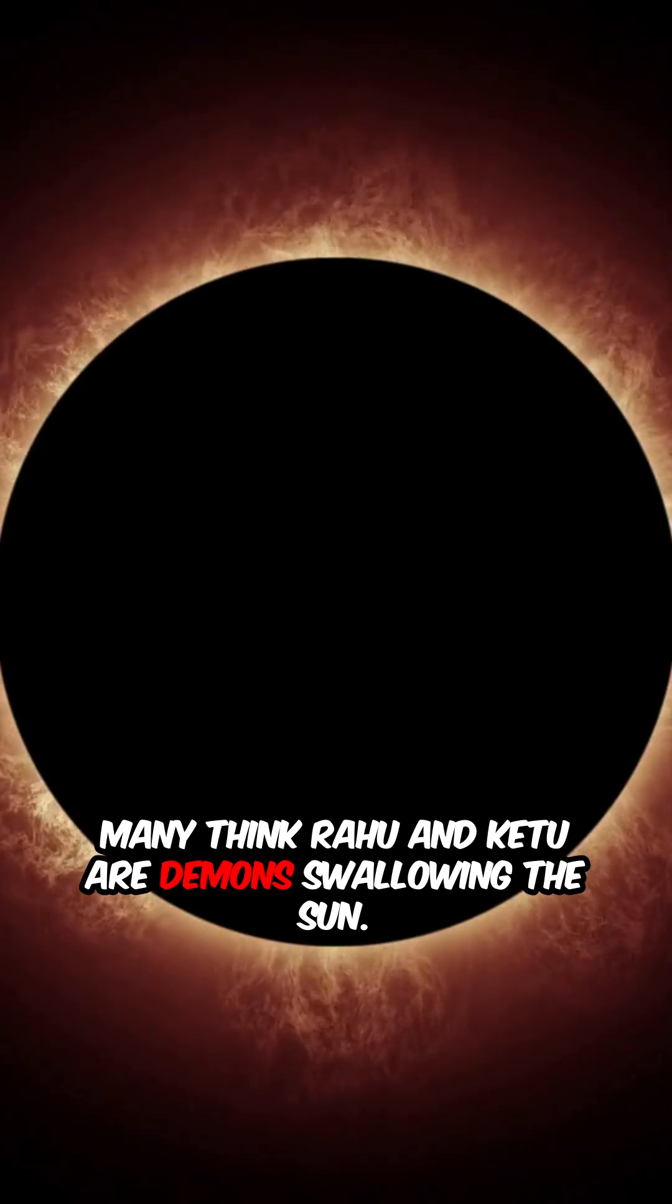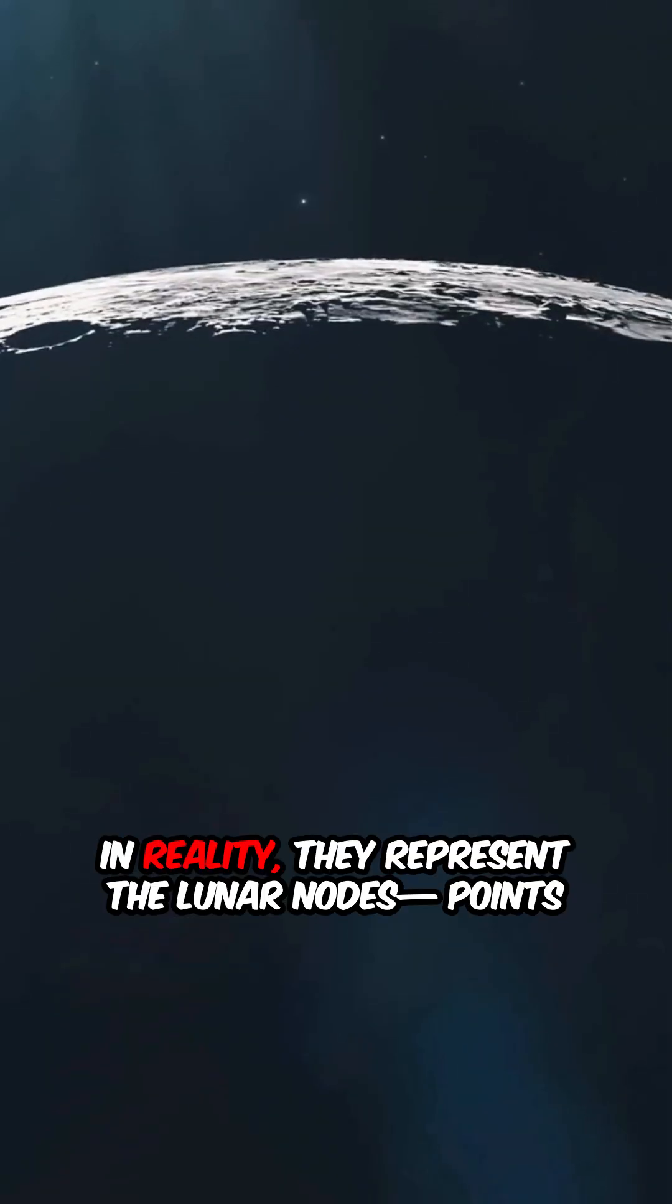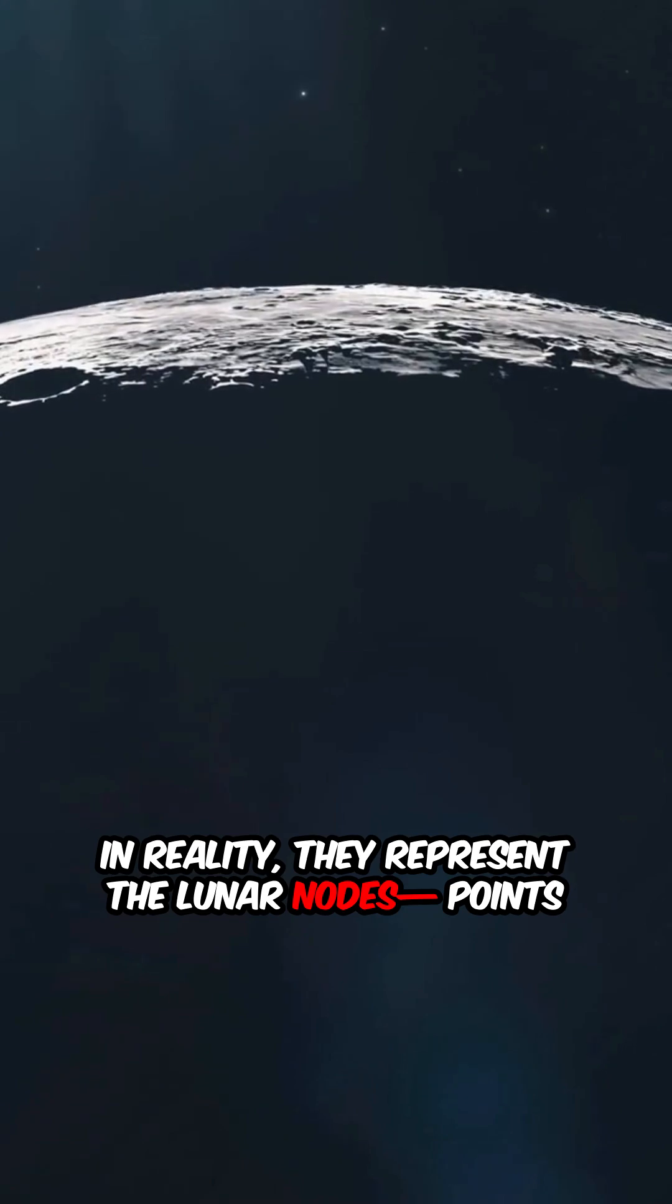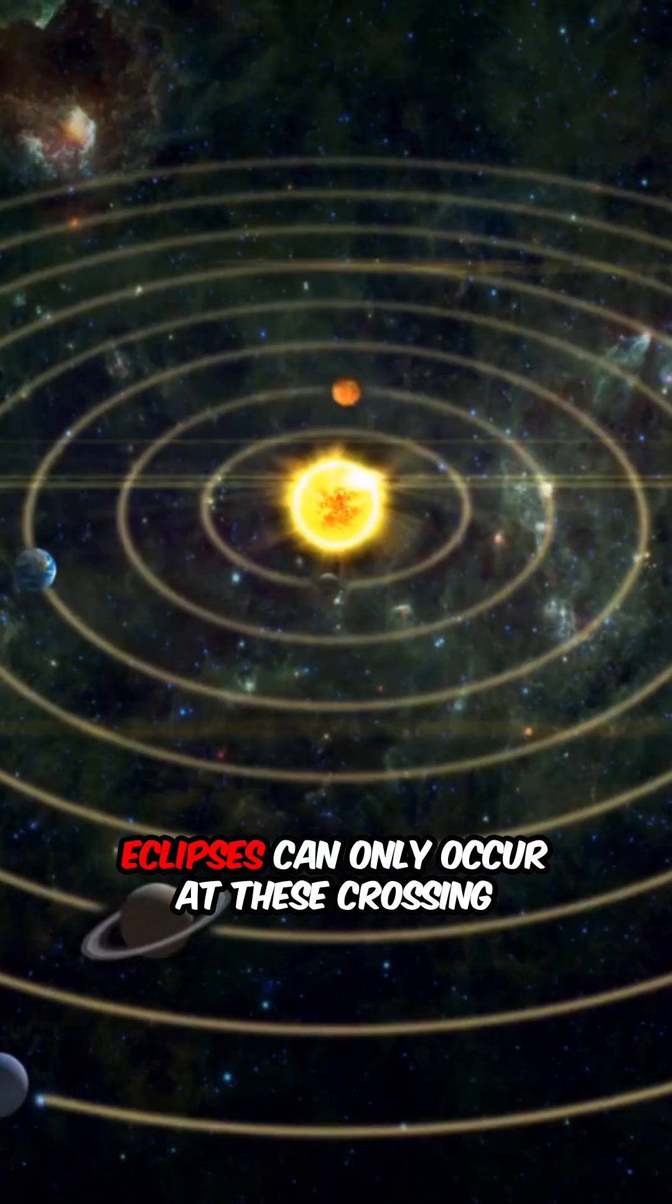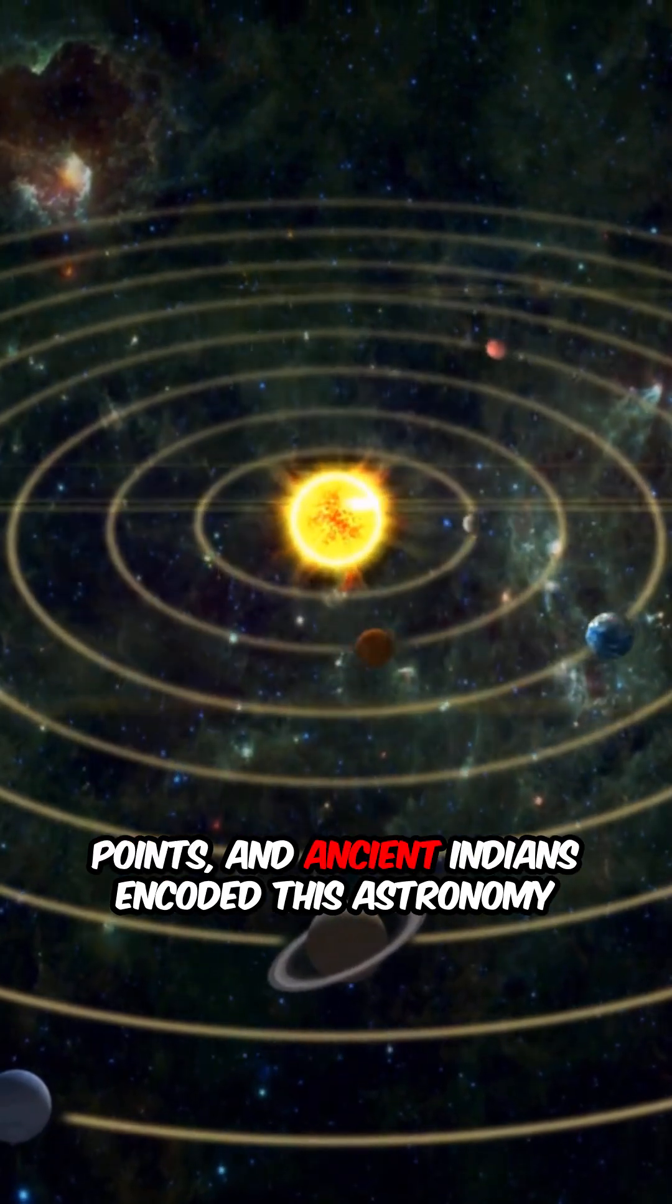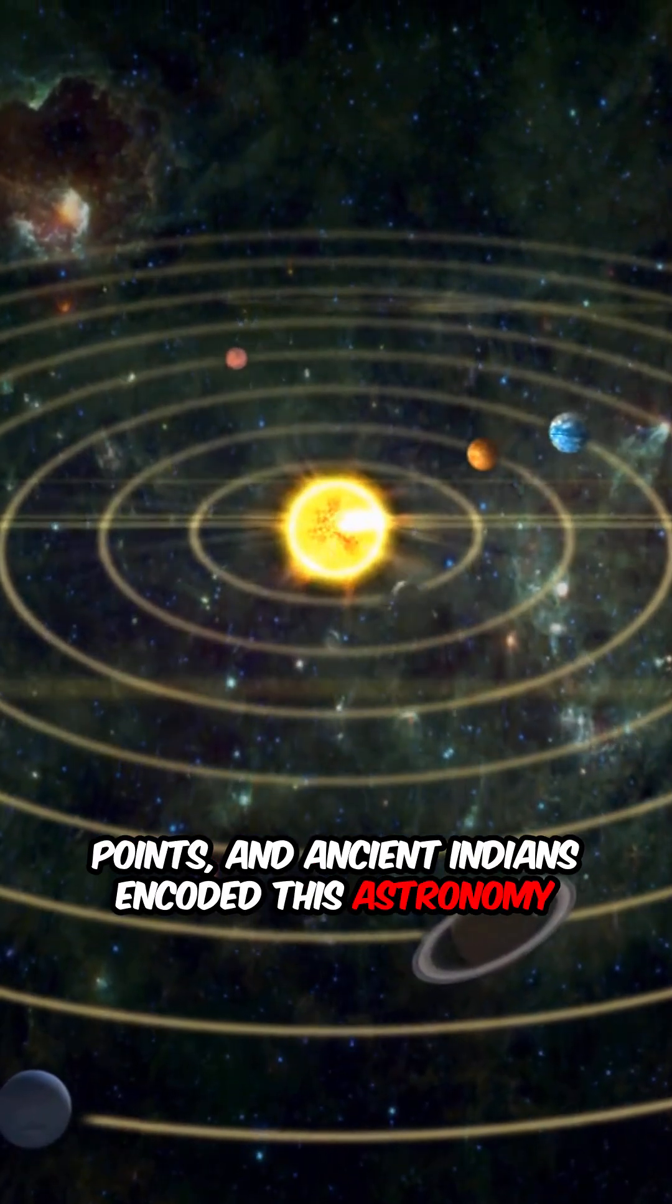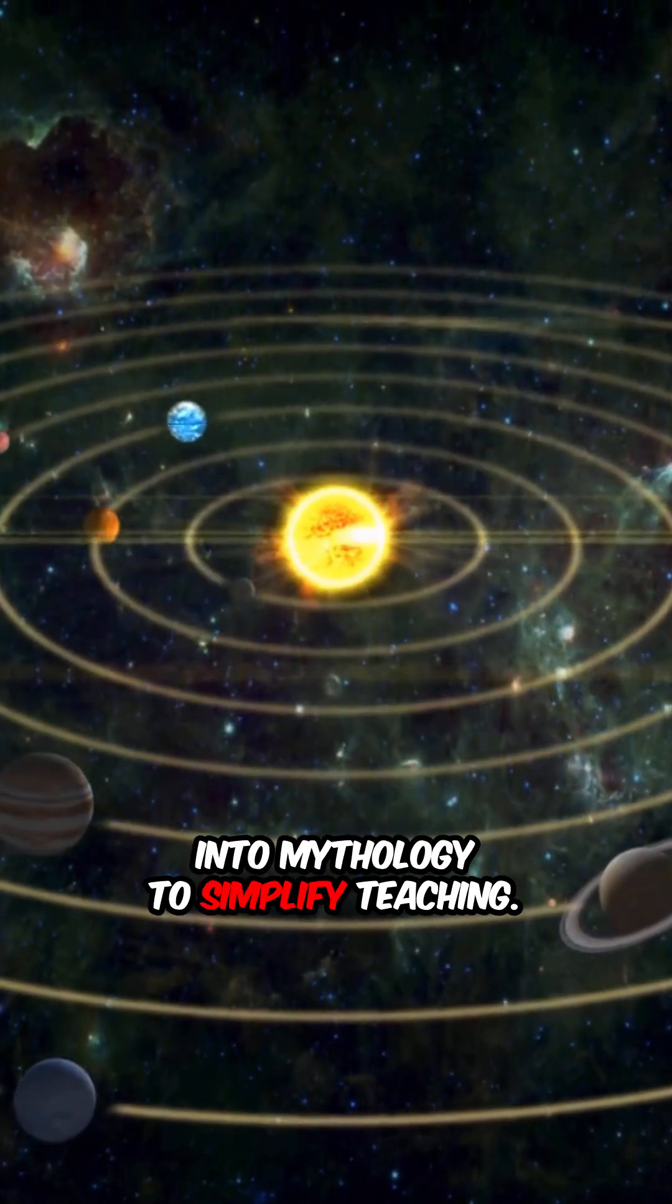Many think Rahu and Ketu are demons swallowing the sun. In reality, they represent the lunar nodes, points where the moon's path crosses the sun's. Eclipses can only occur at these crossing points, and ancient Indians encoded this astronomy into mythology to simplify teaching.